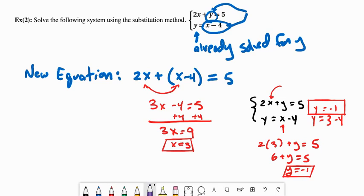Since they match, we know that we've done this correctly. And we can say that our solution to the system is the ordered pair 3 comma negative 1.